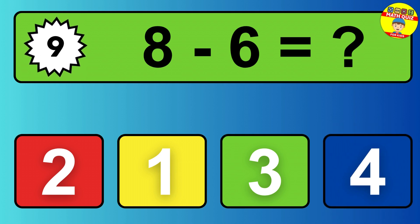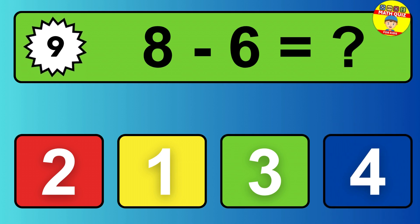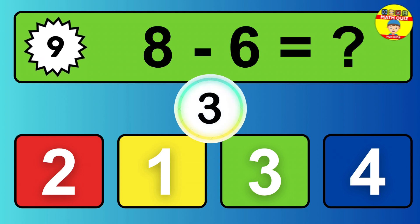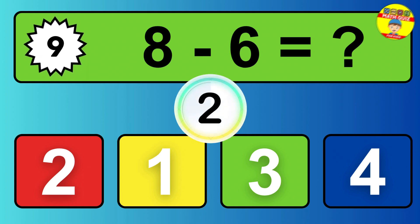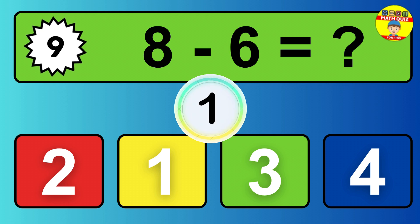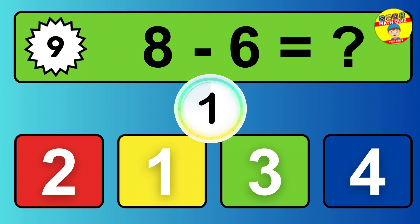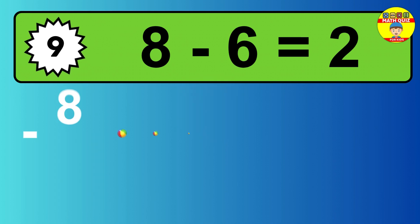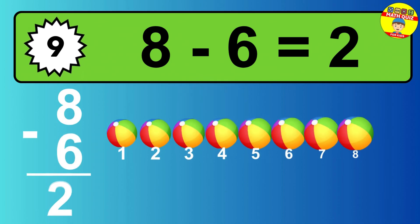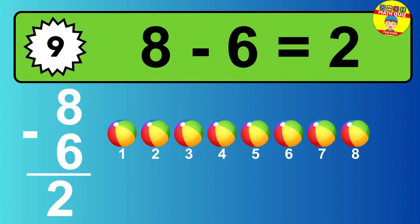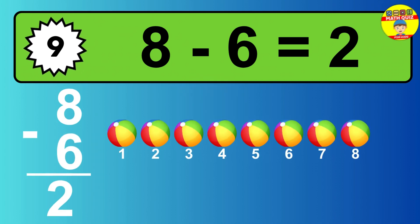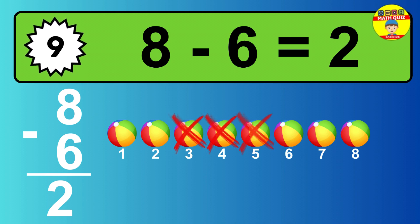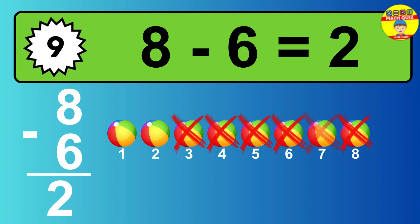Question nine. Eight minus six equals what? So the answer is, eight minus six is two. Let's count it. One, two.